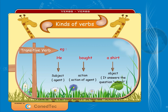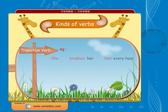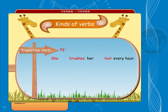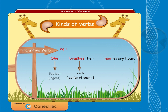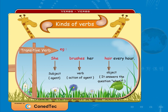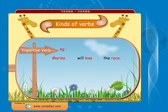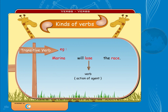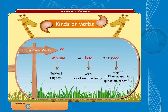In 'She brushes her hair every hour,' 'brushes' is the verb, 'she' is the subject, and 'hair' is the object. In 'Marina will lose the race,' 'lose' is the verb, 'Marina' is the subject, and 'race' is the object.